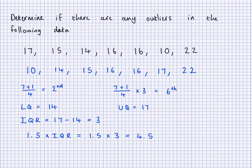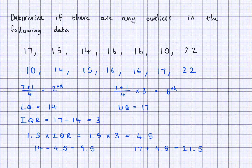What I do is subtract 4.5 from the lower quartile, and add 4.5 to the upper quartile — that gives the range. If data values are within that range, they are not outliers; if they are outside that range, they are outliers. So the lower quartile is 14, giving us 14 minus 4.5 equals 9.5. The upper quartile is 17, and 17 add 4.5 gives 21.5. Values less than 9.5 are small outliers, and values more than 21.5 are outliers on the larger side.